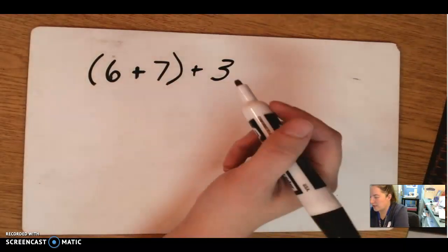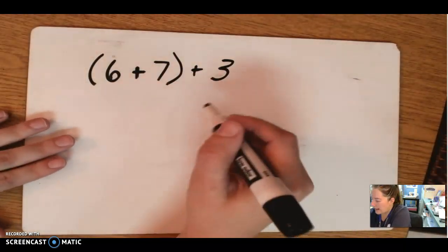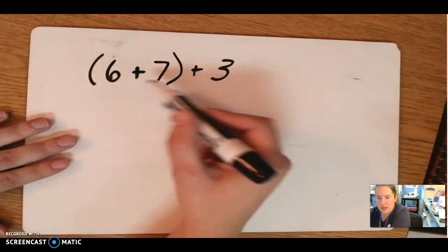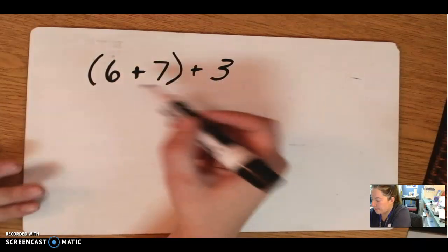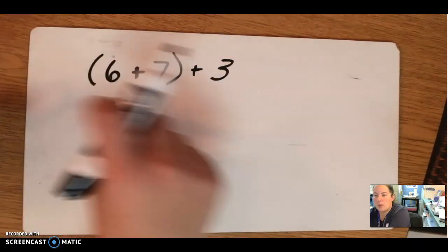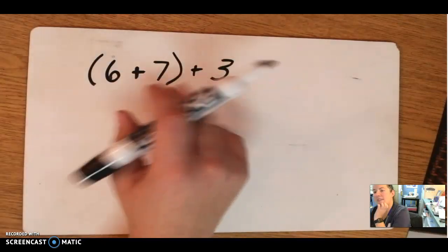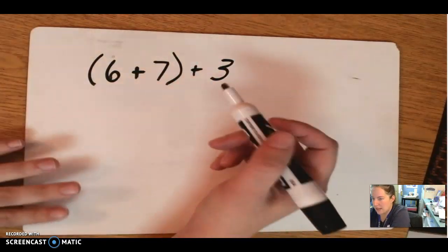Hey guys, Ms. Tate here. So you know when you're adding and subtracting, say you have this problem: 6 plus 7 plus 3. You know how you can move the numbers around? You don't necessarily have to do it in this exact order, you still get the same thing.